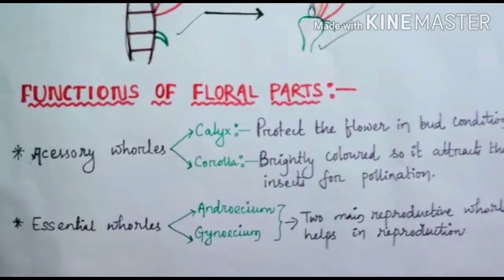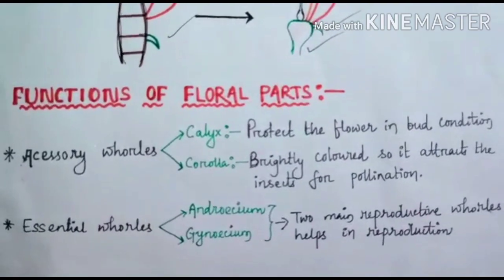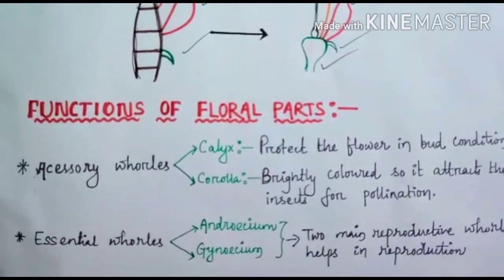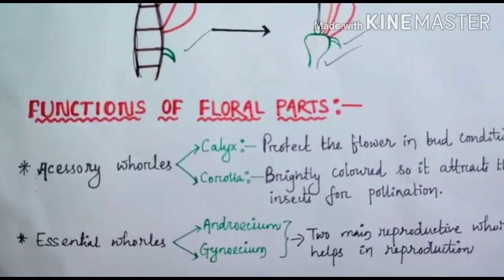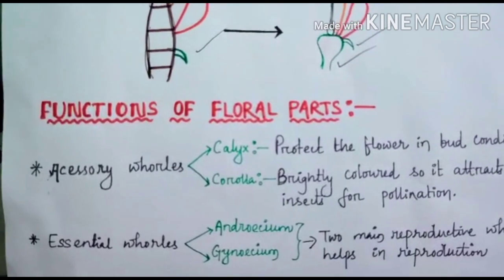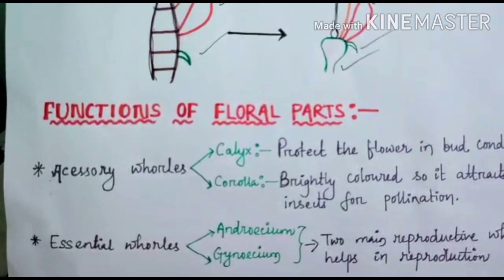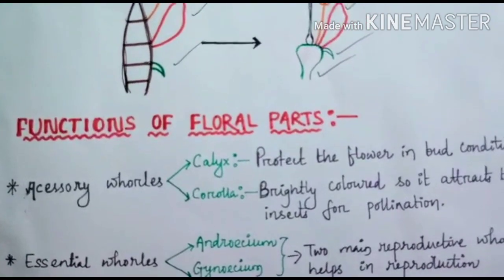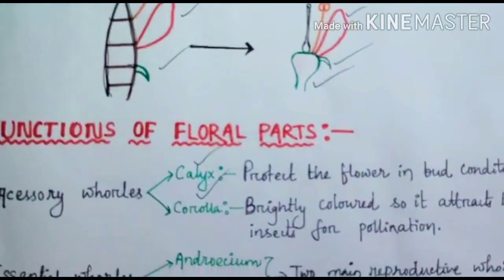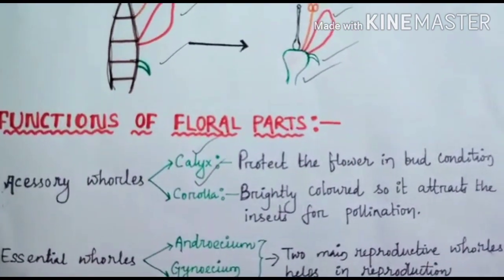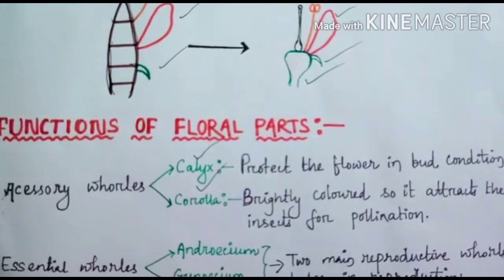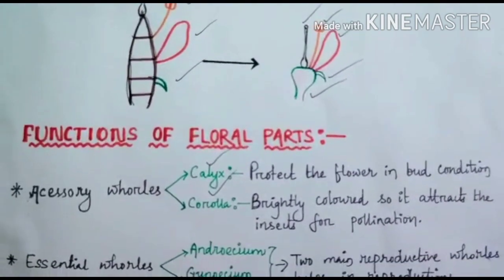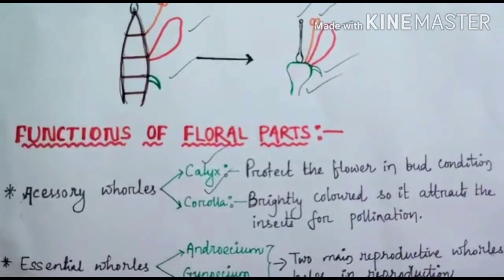Now let's discuss the functions of these floral parts. The floral parts are the calyx, corolla, androecium, and gynoecium. Out of these four whorls, two are called the accessory whorls — the calyx and corolla — because they help in the process of reproduction. The function of the calyx is to protect the flower in the bud condition. When the flower is in bud condition, it is protected by the sepals, which form the calyx.